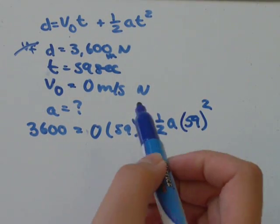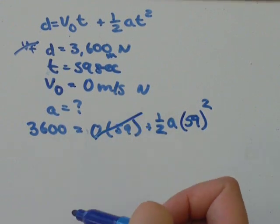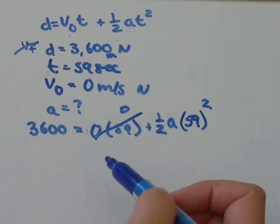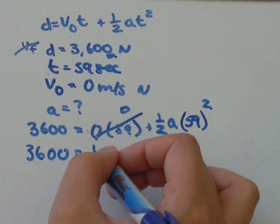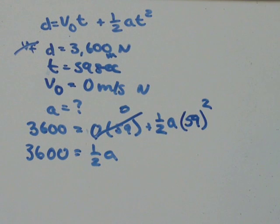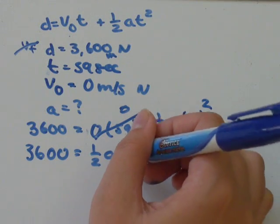The first thing I would do is say, well, 0 times 59, 0 times anything is 0, so we can cross that out, it's just 0. So 3,600 equals 1 over 2, a, 59 squared. I just stick that in your calculator, 3, 4, 8, 1 is what I got.